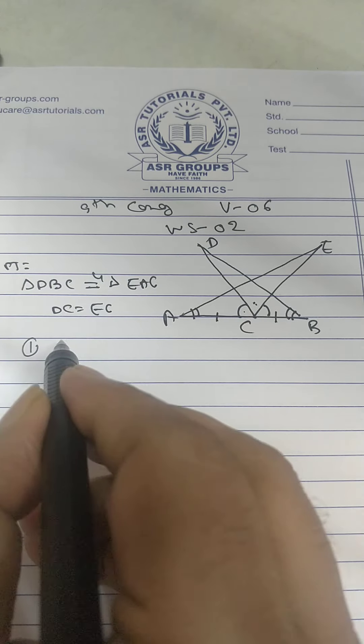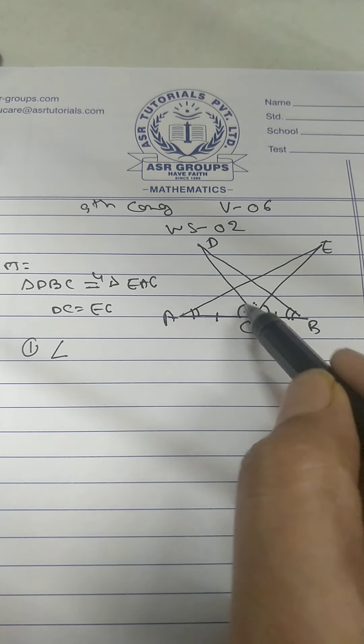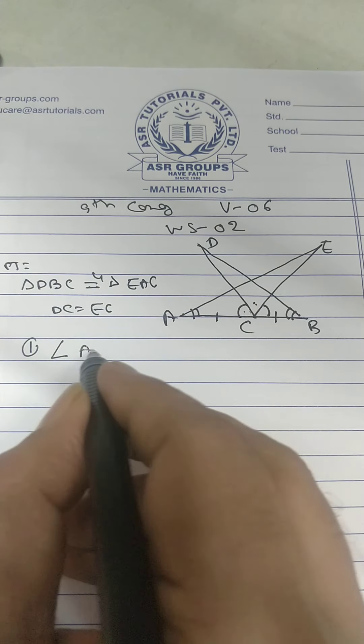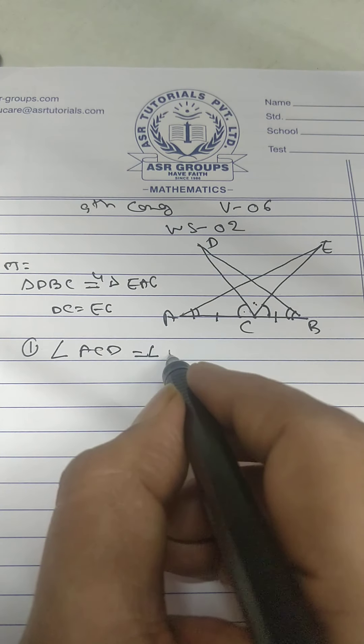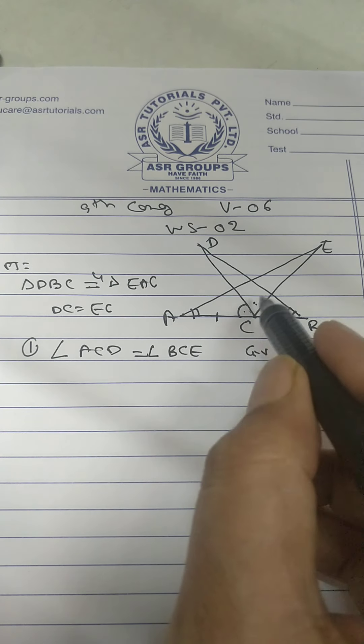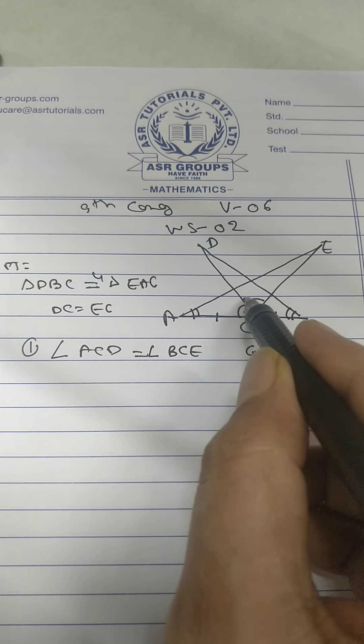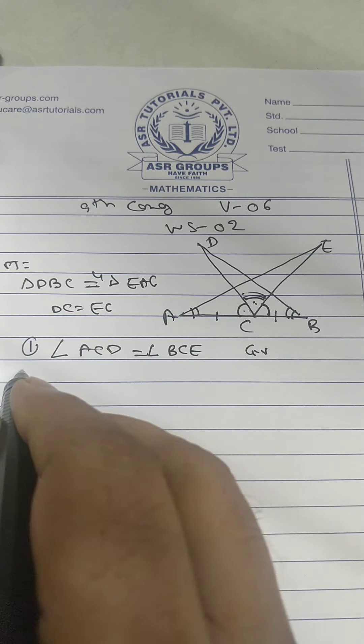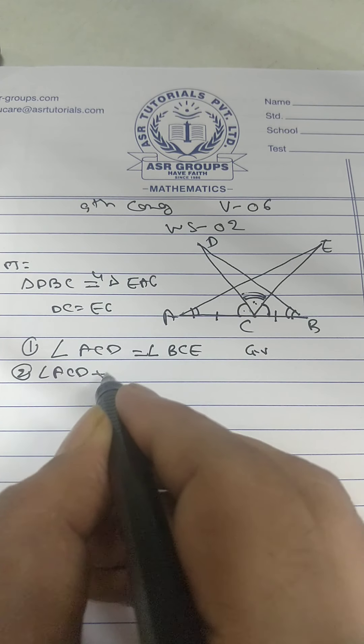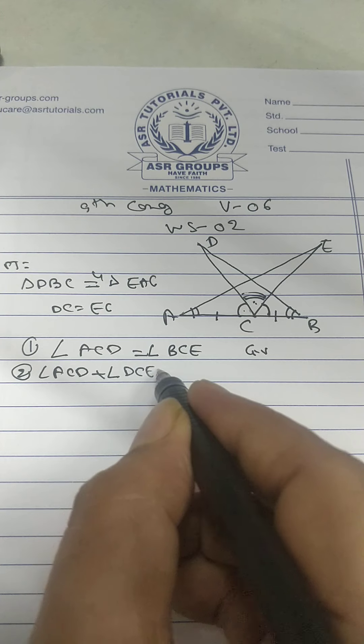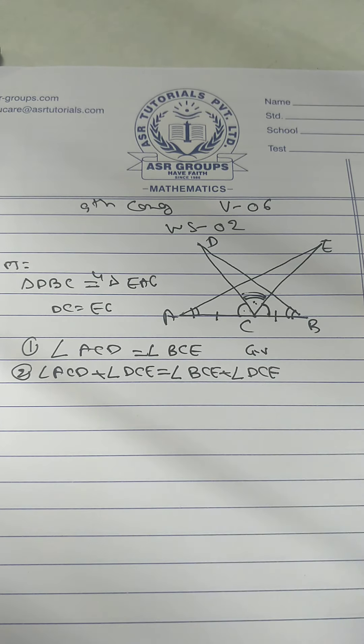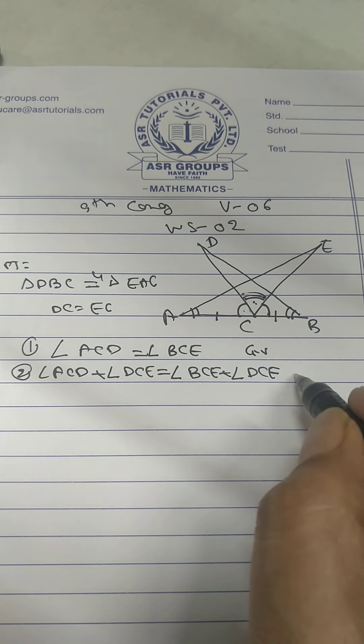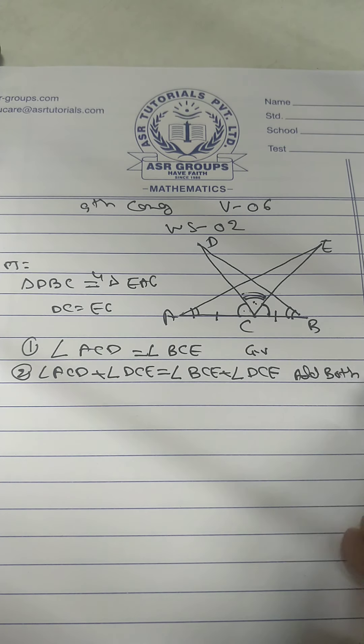That is the first part. Angle ACD equal BCE. Given we will add both sides this angle. Angle ACD plus DCE. Angle BCE plus DCE. Add both side angle DCE.